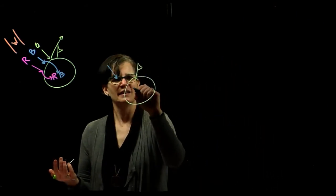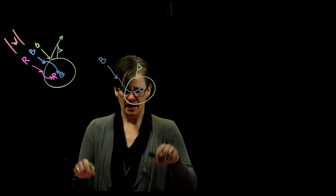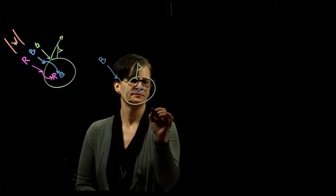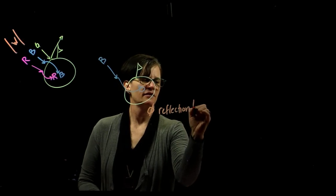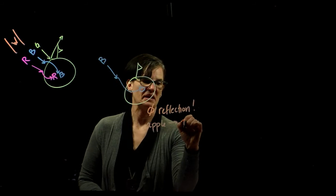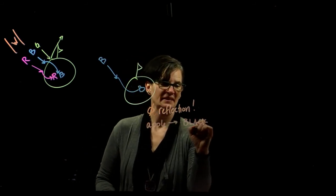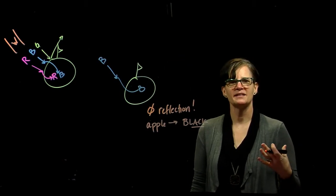So that blue light goes into the object and nothing is reflected off the surface of that object. And so my apple becomes black. It appears rotten. It appears black because no light is being reflected.